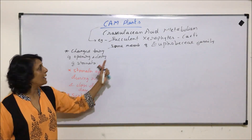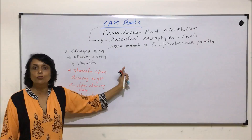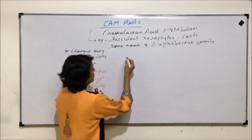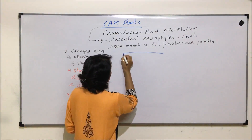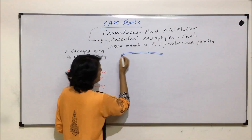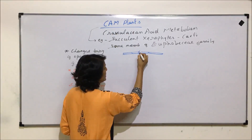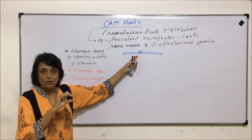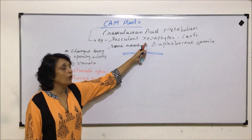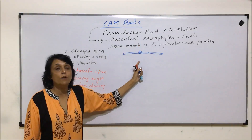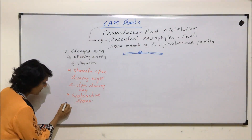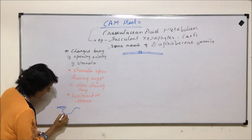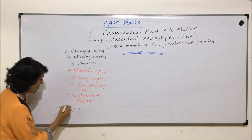So what exactly happens in this pathway? How do these plants perform photosynthesis with this changed timing? The photosynthetic process takes place in mesophyll cells only — the location is the same. Here the stomata are present; we are drawing them on the surface, but we know that in xerophytes the stomata are also sunken — that is, slightly on the deeper side of the epidermis.